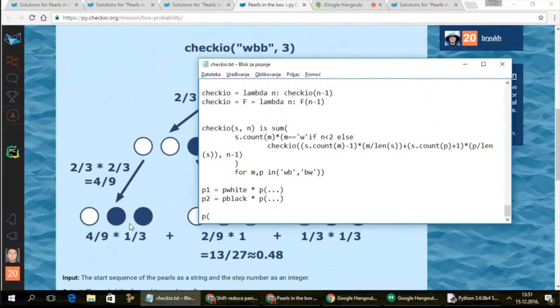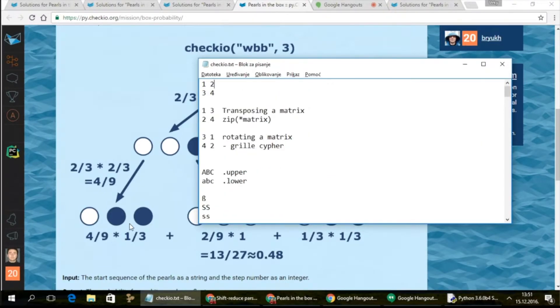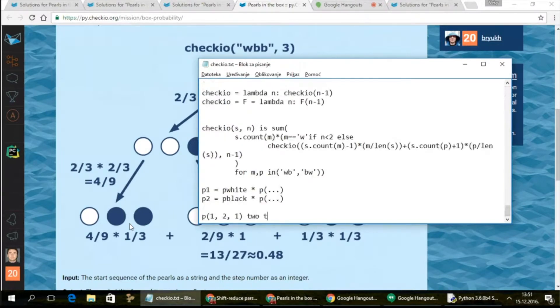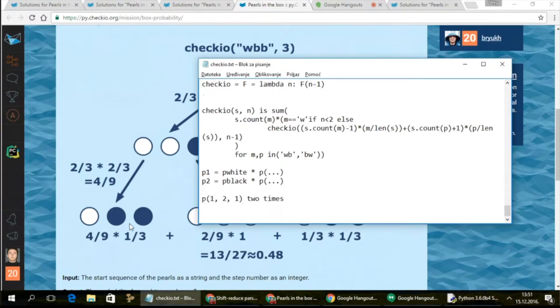P of, I don't know, number of whites, number of blacks, and number of steps. For example, in this case, there's one step. So you calculate this one two times. And you don't really have to. Python can help you, and it is nice to know that Python can help you.